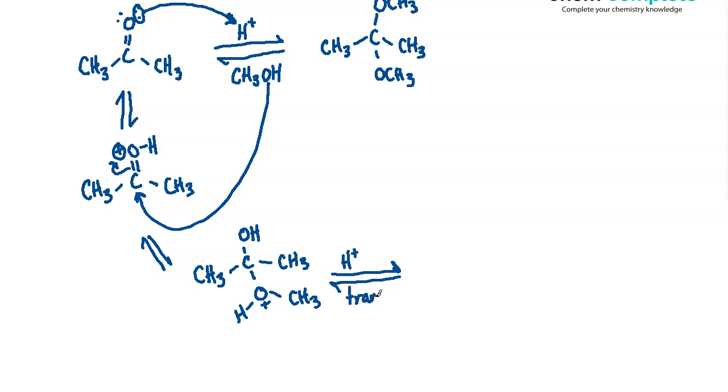Usually when I'm teaching this to my students, I just tell them we're going to have a proton transfer here. And the proton transfer is basically going to be moved off of the methanol portion down here, and it's going to be put onto the hydroxide up here to make it water, and then water is going to become a good leaving group. So that's the next step that we're going to be involved with here.